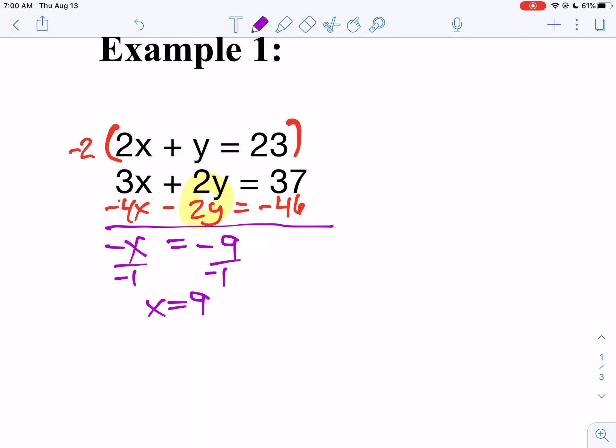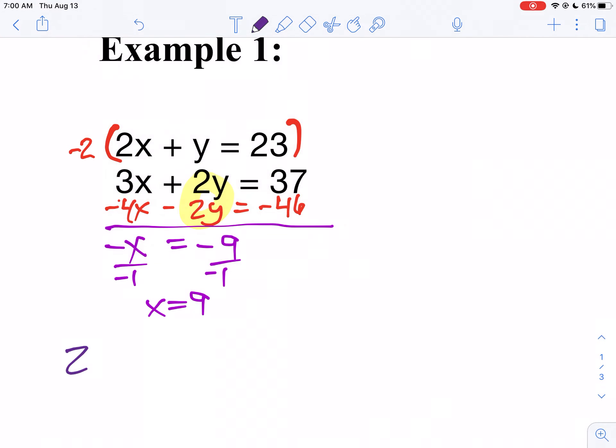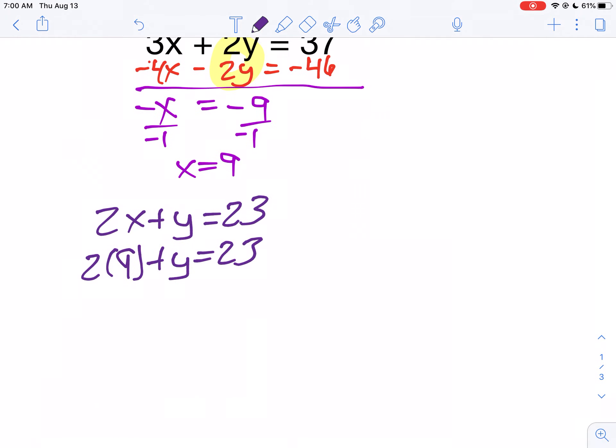So I'm going to say 2x plus y equals 23. But we know x is 9 now. So 2 times 9 plus y equals 23. 2 times 9 is 18. What do you have to add to 18 to get 23? Well, you'd have to add 5. So x equals 9 and y equals 5.